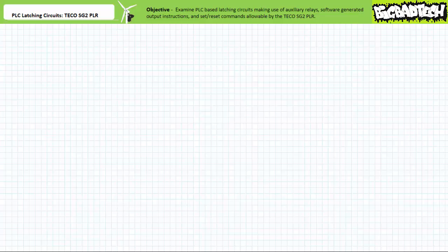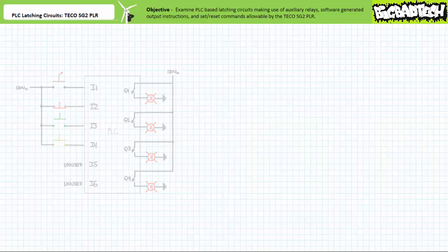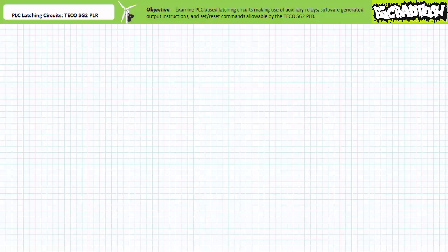Given you should be familiar with the aforementioned content, this lecture should be a relatively smooth and painless tour of how the TECO SG2 PLR client programming software implements various configurations of holding circuits and a chance to simulate and test their functionality. For the purposes of this lecture, we're using a PLC with a normally open maintain contact selector switch on input 1, a normally closed momentary contact red pushbutton on input 2, a normally open momentary contact green pushbutton on input 3, and a normally open momentary contact yellow pushbutton on input 4. Outputs Q1 to Q4 selectively energize or de-energize pilot lamps.